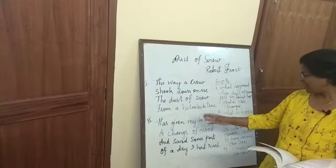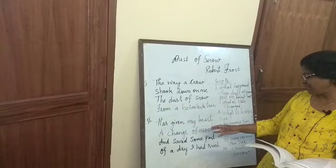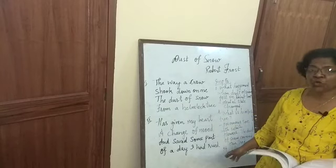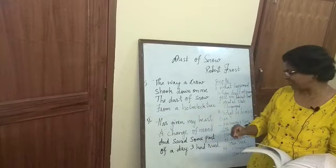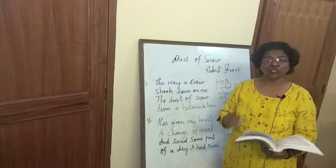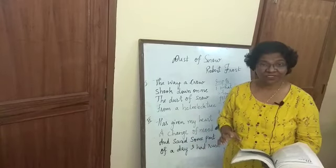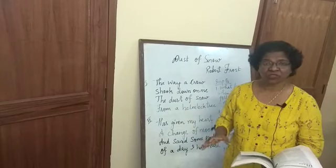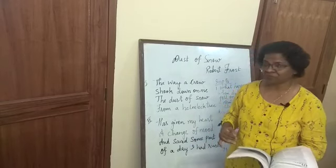The dust of snow fell on him. In the second stanza, he says: 'Has given my heart a change of mood and saved some part of a day I had rood.' Rood meaning here is sorrow. The day which was going to be very bad for him because of his sadness has been saved because of the dust of snow which fell on him.